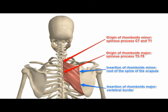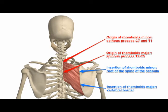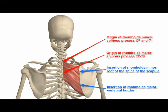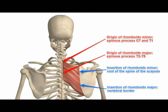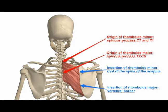The rhomboid major is inferior to the rhomboid minor. It originates on the spinous process of vertebrae T2 through T5. It also inserts on the medial border of the scapula, but just inferior to the scapular spine and all the way down to the inferior angle of the scapula.